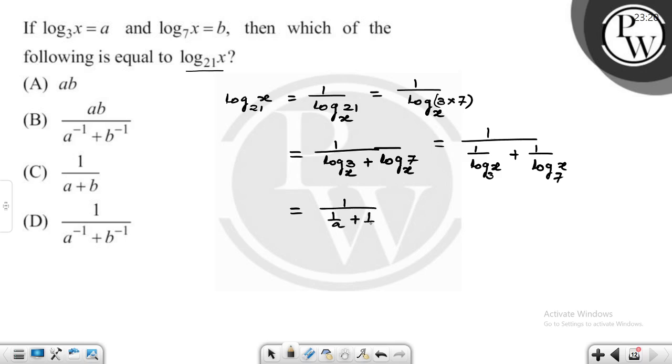This simplifies to 1 upon a inverse plus b inverse. So option D is the correct option.